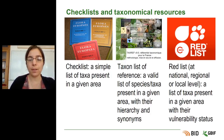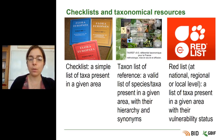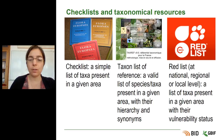You can also have some taxon lists of referents, which are valid lists of species or taxa that are present in a given area, just like checklists, but with hierarchy and synonyms. And then you also have red lists that can work at national, regional or local level, and that are lists of taxa present in a given area with their vulnerability status.